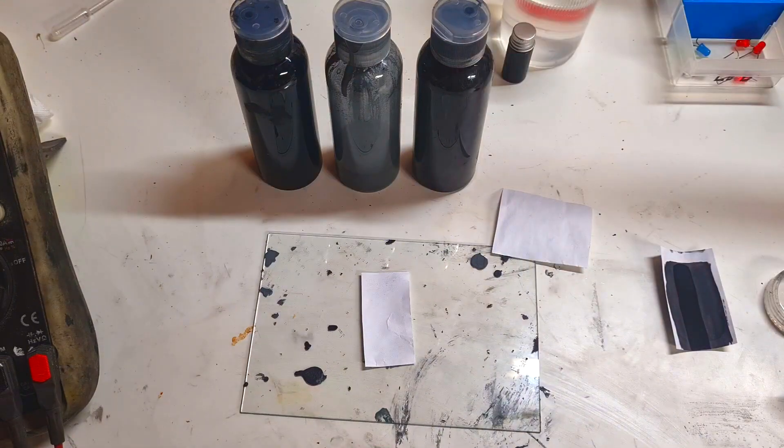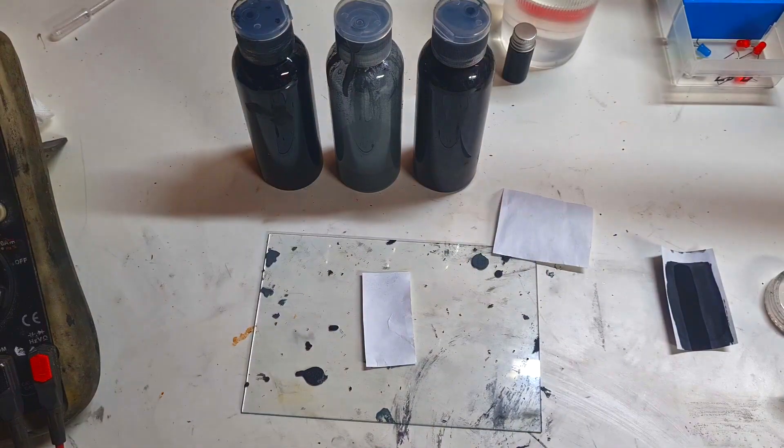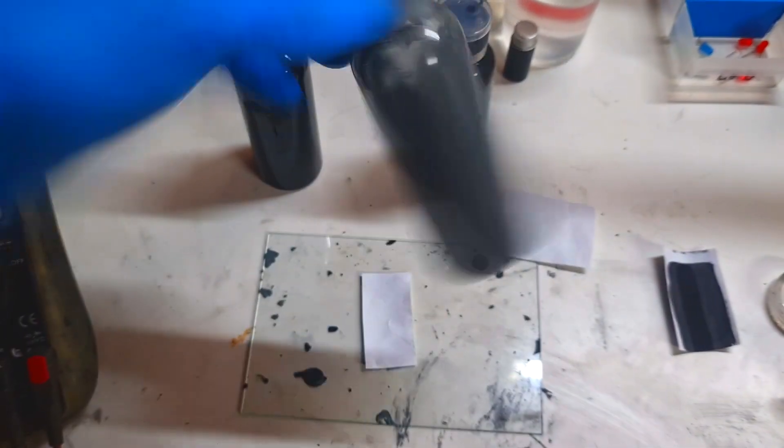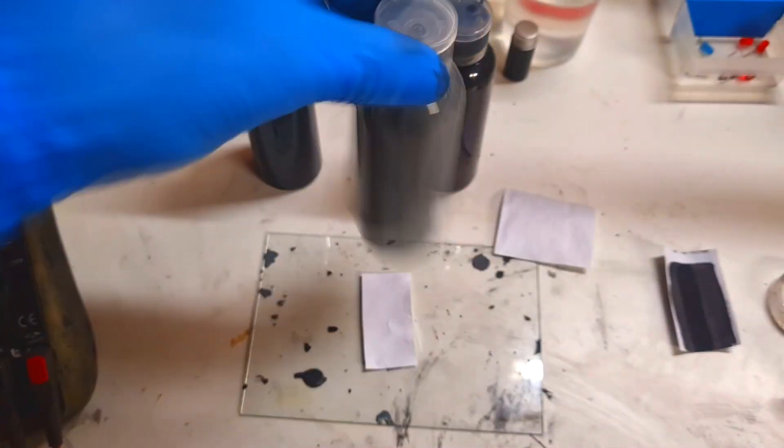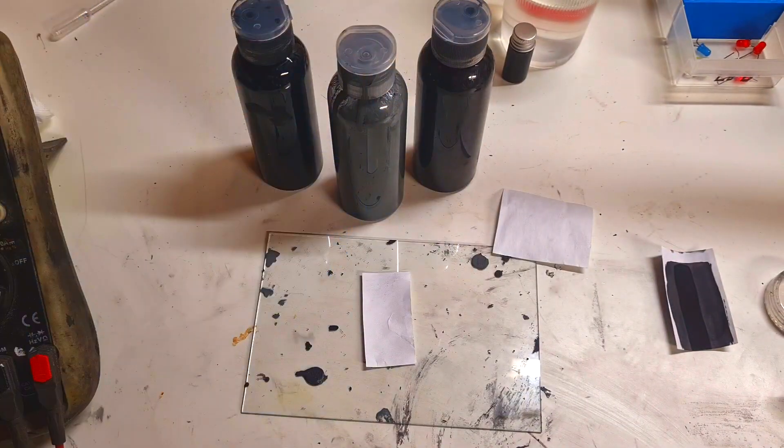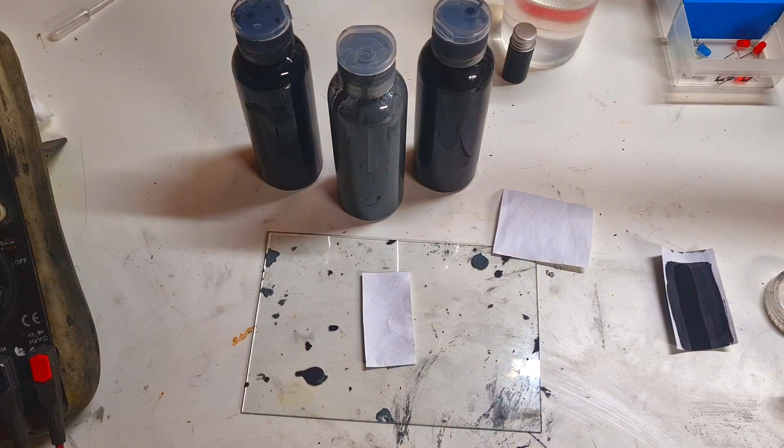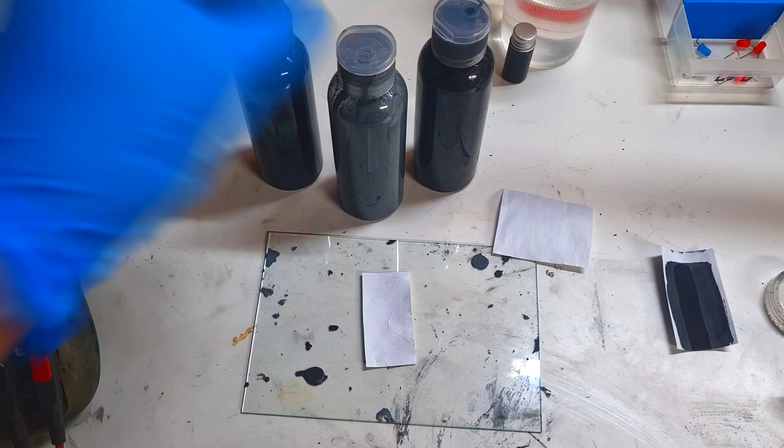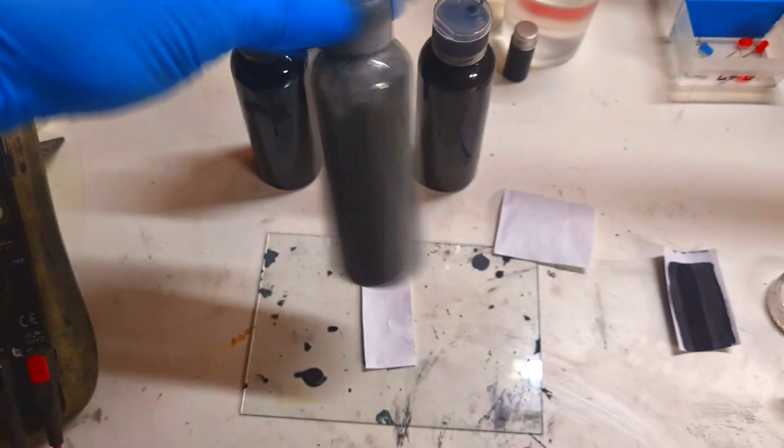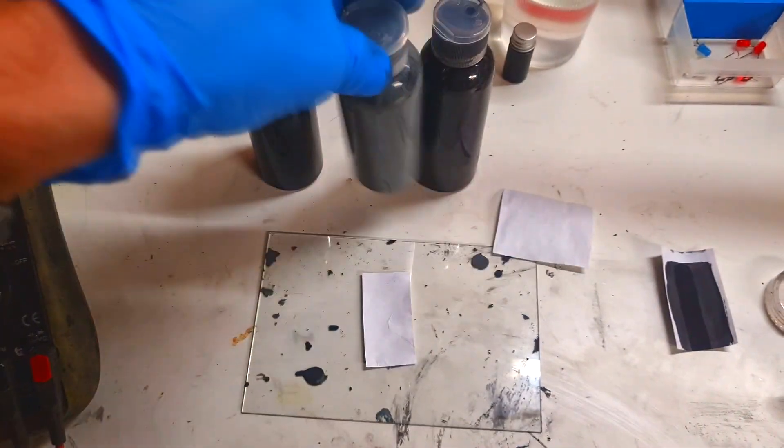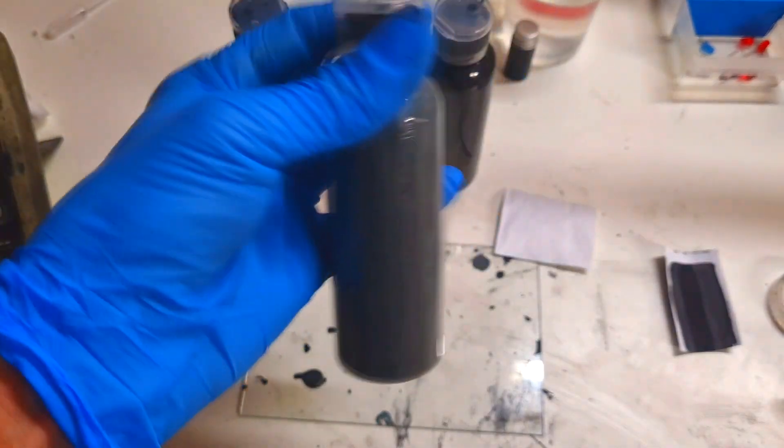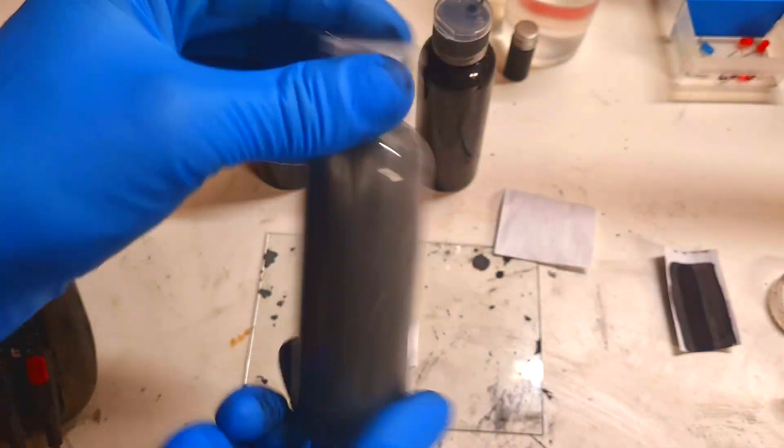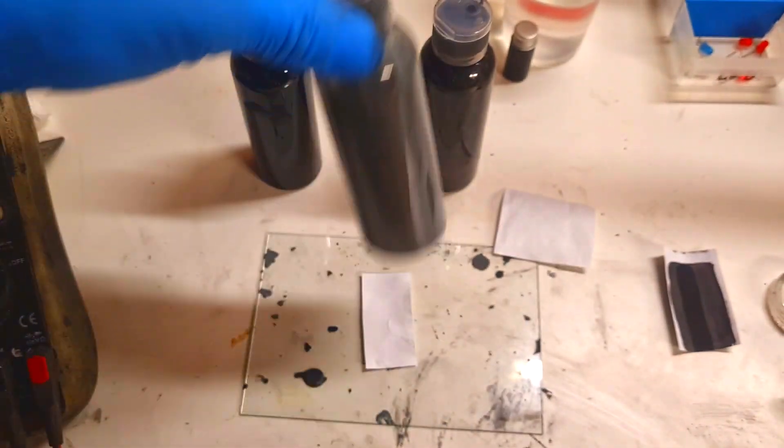Now you also need three inks. One ink will be the anode ink, and this ink is based on zinc. To make this ink you will need some zinc powder, some ethanol for the solvent, and in my case for the binder I use some PVB. So to make this anode ink you need fine zinc powder, ethanol, and PVB or some other binder.